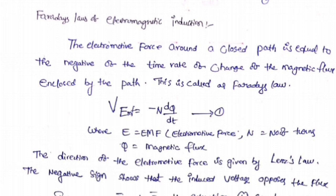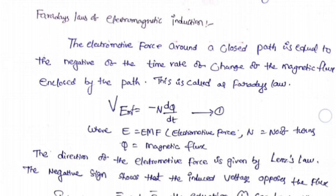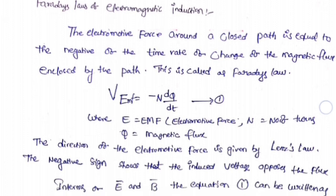According to Faraday's laws of electromagnetic induction, the electromotive force around a closed path is equal to the negative of the time rate of change of magnetic flux enclosed by the path. The EMF induced: V_EMF = -N dφ/dt, where N is the number of turns and φ is the magnetic flux. The negative sign shows that the induced voltage opposes the flux, as given by Lenz's law.